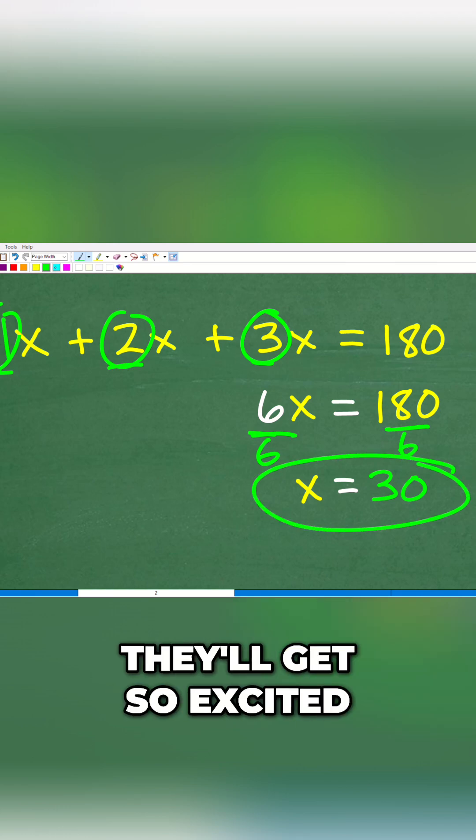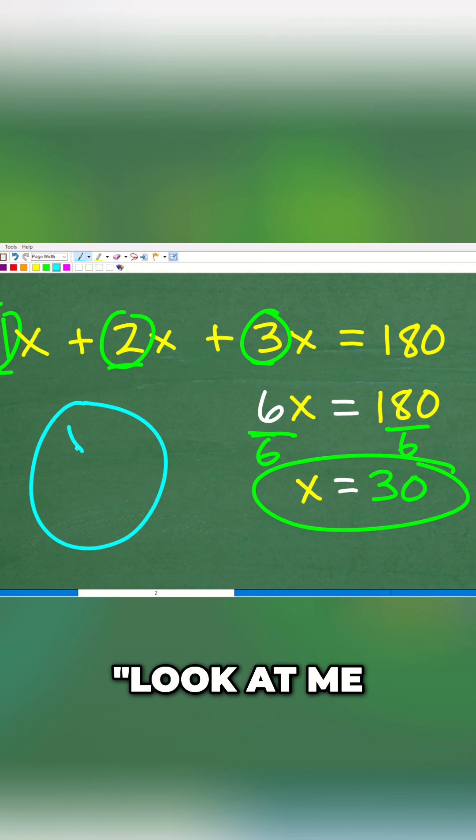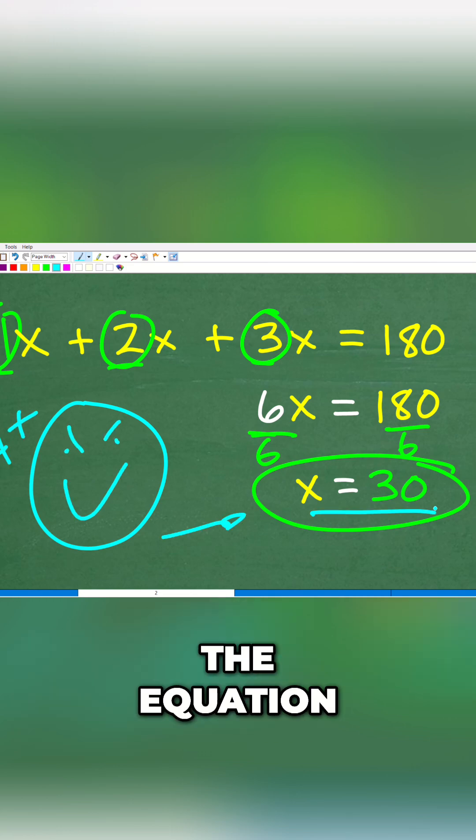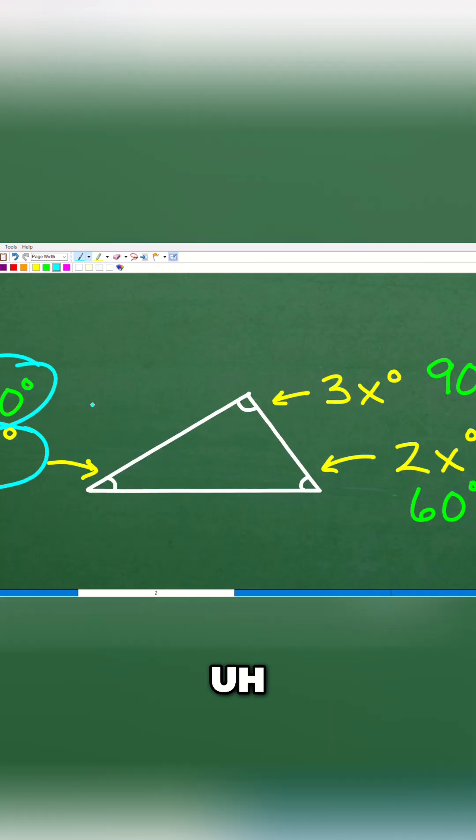Now a lot of students get so excited, like look at me this is 30 because they're focused on solving the equation, but you forgot to answer the question. So x is equal to 30 and that basically means that this angle here is 30 degrees.